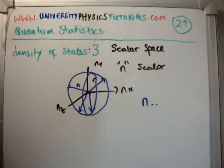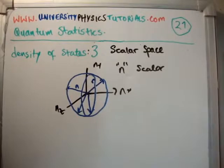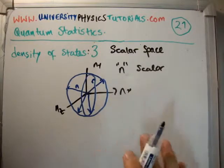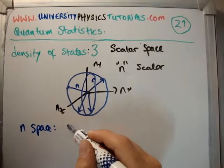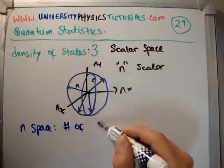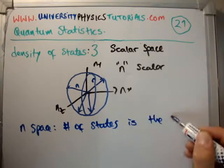And if you want to add a thickness, you will, of course, multiply by a dn. So how many, what is the, where do we go from here? Now remember what I said previously, that in n space, the number of states is the volume.